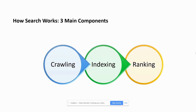Before we get into how to optimize our images, we need to understand the three main components of how search works. It starts with crawling, where a bot comes to your site and begins to crawl your page, reading all of your information to get a broader idea of what's on your website. The next thing it does is index — it starts to categorize your site, putting things in different places, and begins to store that information within Google's database to understand what the content's about, which results in rankings. This is how your site shows up for a particular query when somebody types it into the search engine.